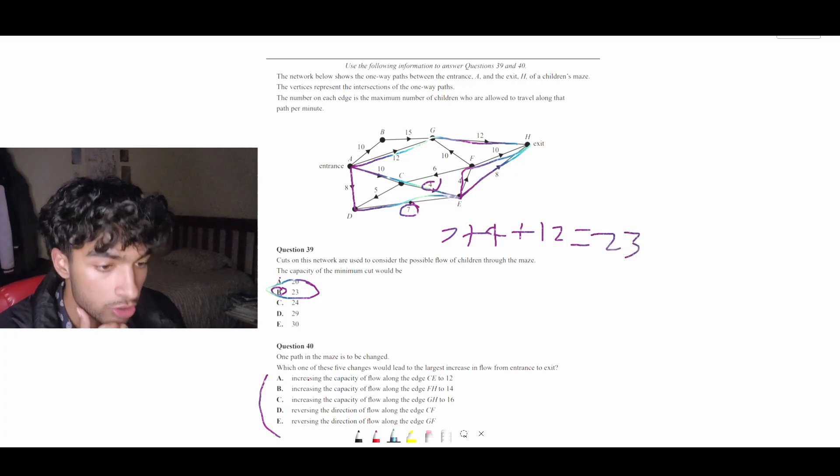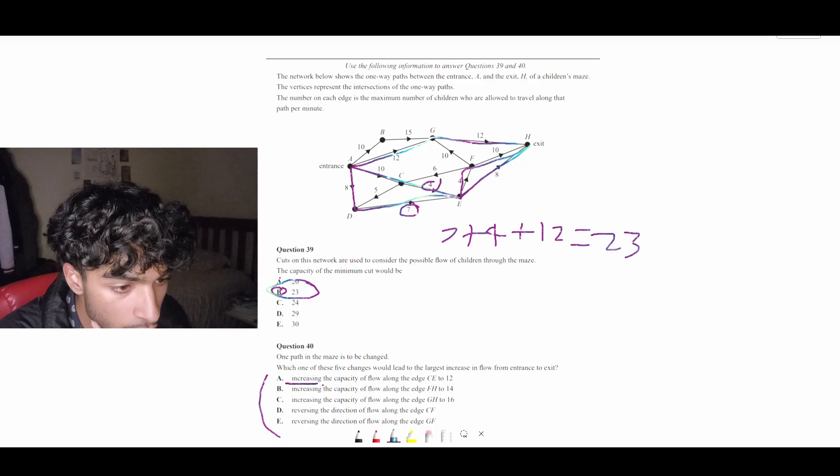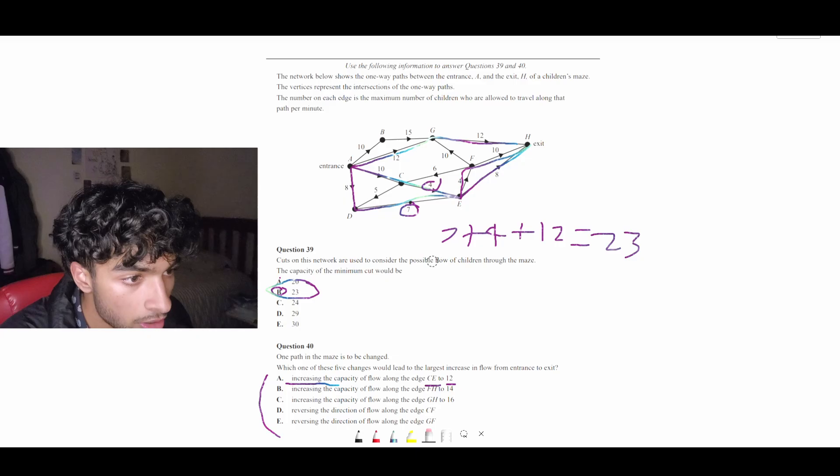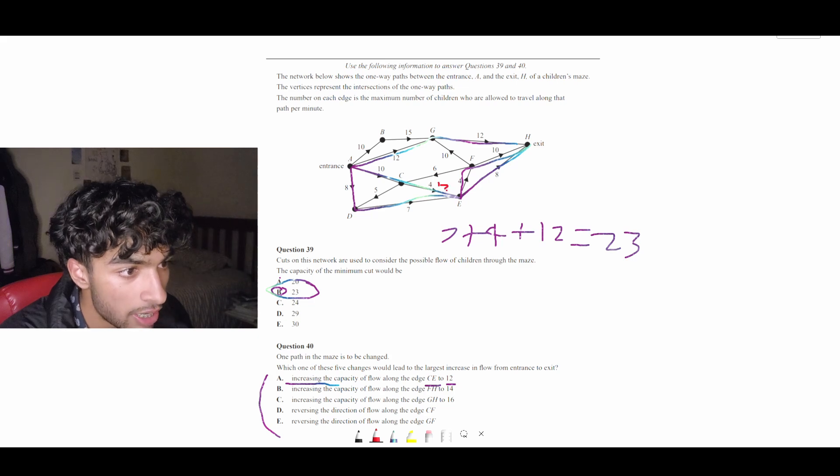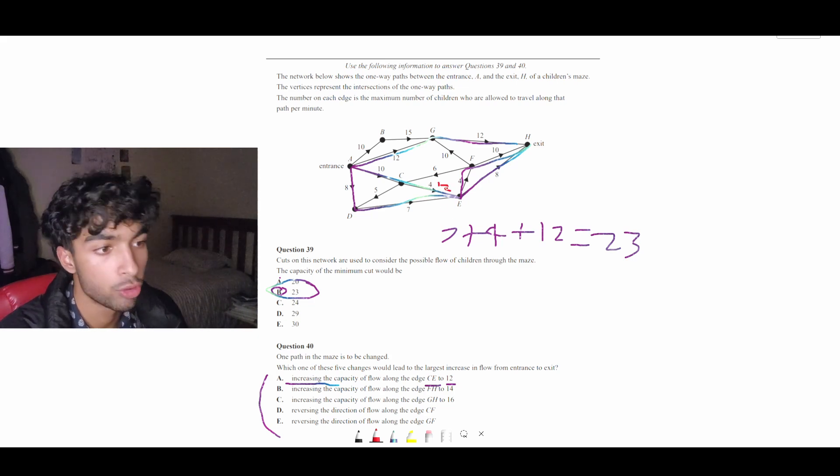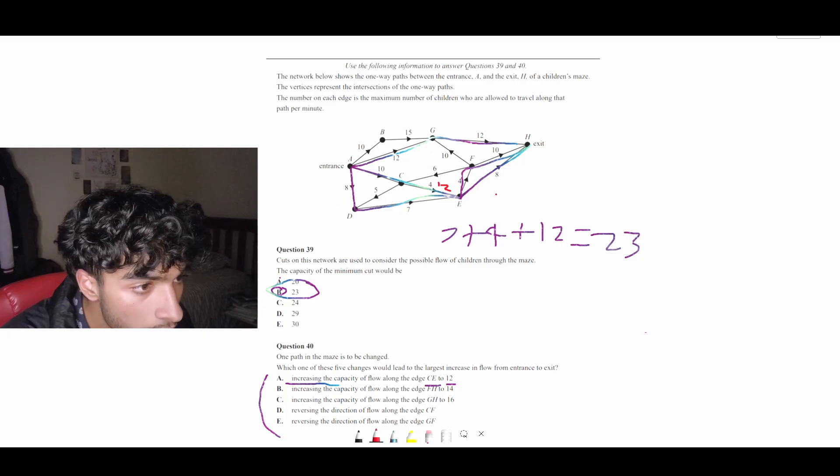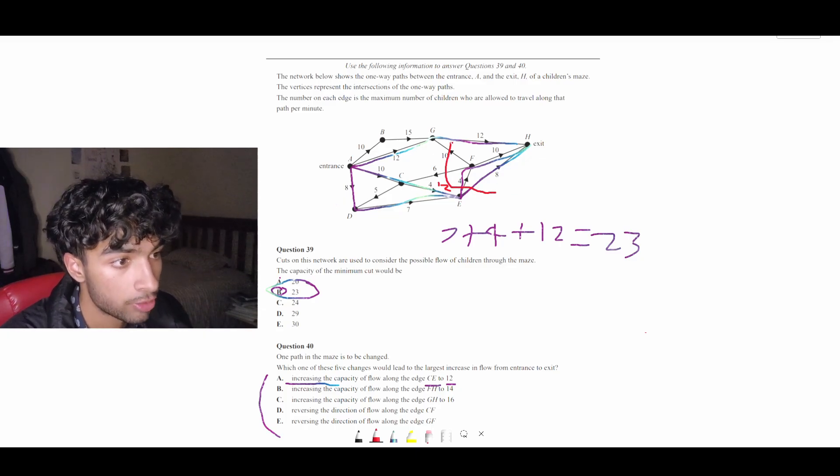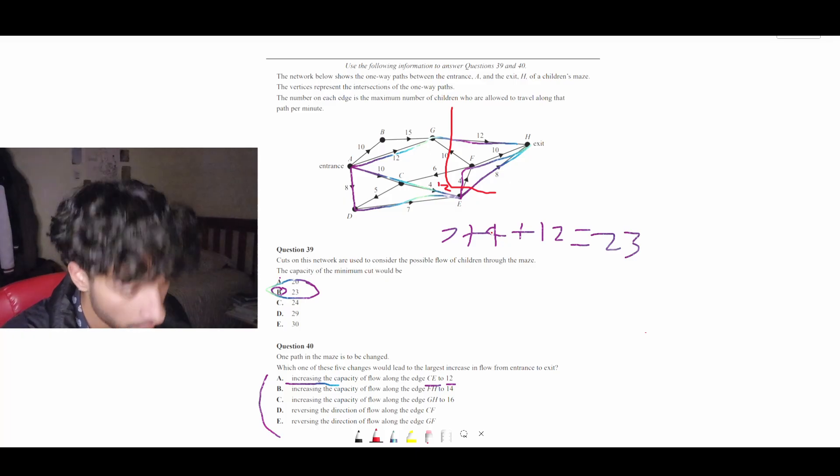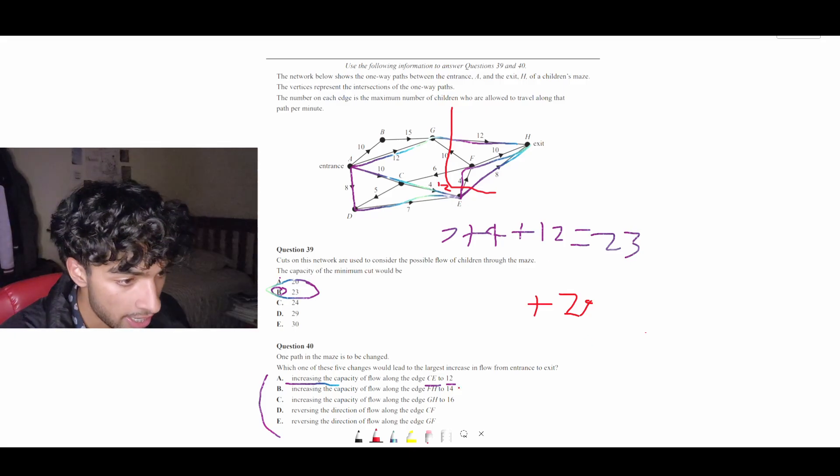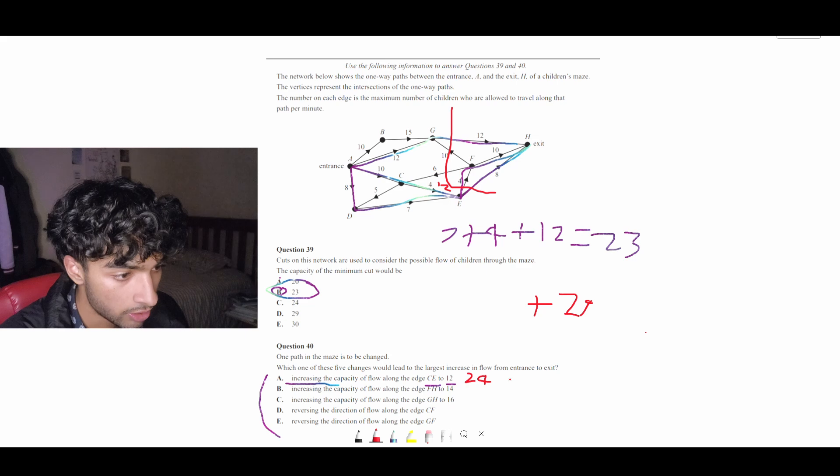So now we can go on to question 40 and let's try option A. Increase the capacity of flow along CE to 12. So we go to CE, which let me just erase this. CE is down here. So we're going to change this from 4 to 12. Initially, it looks like it might be a massive change because we're going from 4 to 12, that's a plus 8. But we have to remember we're using the minimum cut strategy here. So if we go here, that's not going to give us the minimum cut anymore. So we probably go down 8 plus 4 plus 12. And that's going to give us 24, which is actually really small. So option A gives us 24, which is only additional one.